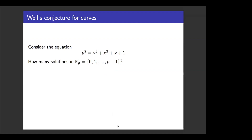So you can actually model this counting process by a random process, where you plug in a random number for x, and you find that it has an average of one square root. The deviation from that expected value is a random point — it's plus one with probability one half, and minus one with probability one half. This leads you to suspect that, since there are p possible values for x, there should be about p solutions within an error on the order of magnitude of the square root of p.